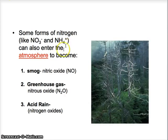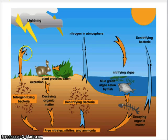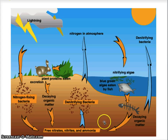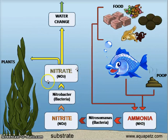Some forms of nitrogen can also enter the atmosphere to become smog, such as nitric oxide and nitrous oxide, which is a greenhouse gas that traps heat, or it could lead to acid rain — all damaging to the environment. That's the nitrogen cycle in a nutshell. Remember that bacteria play a really important role, as well as the atmosphere and plants. We need to know this nitrogen cycle so that when we make our bottle ecosystem project, we have a better understanding of how nitrogen gets cycled in ecosystems, especially for the aquatic ecosystem. It's going to be really important.